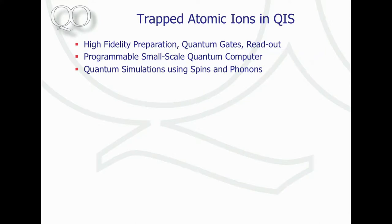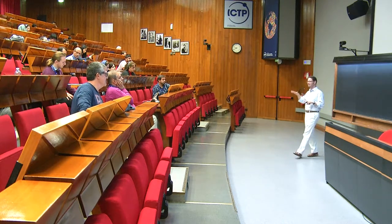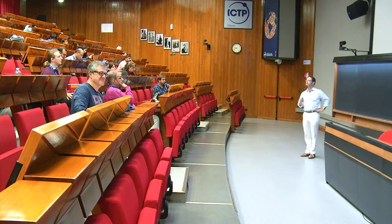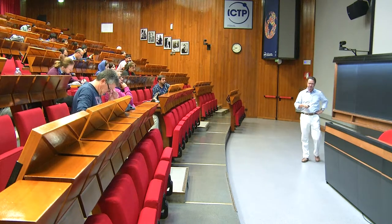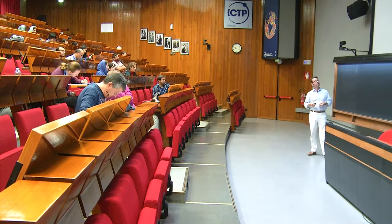Just to remind you, trapped ions are extremely useful in quantum information science. Full-fledged quantum algorithms have been implemented, very high gate fidelities have been achieved, and state preparation can be done with fidelities of typically 99.99% and possibly some more nines, so they work excellently. Quantum simulations have been demonstrated recently with 53 ions even.